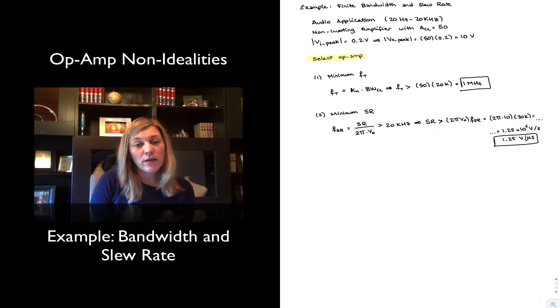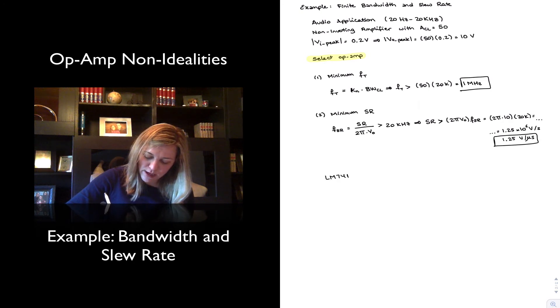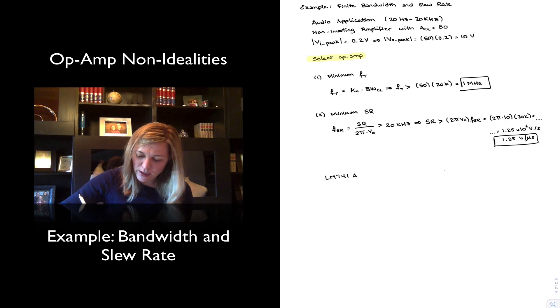So now I can go, either I have a set of op-amps from which I have to choose, or if I have complete freedom, I can go to a manufacturer's website or a distributor's website and do a parametric search and select a specific value for fT, a specific value for slew rate, and it'll give me a list of op-amps that I can use. Let's imagine that I have two that I can compare. For example, I have a 741A and an LM318.